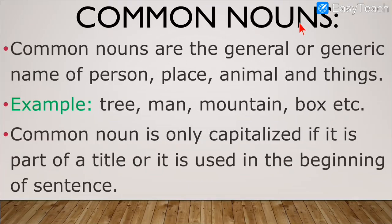After that, we had seen what are common nouns. Common nouns are the general or generic name of a person, place, animal, and things. Generic means the general names. In general, we call any person, any place, any animal, or anything — it is a general name. For example, tree — there are so many trees in the world. Man — there are so many men in the world. Mountain — so many mountains in the world. Box — we see so many varieties of boxes. All these are common nouns because these are the common names.